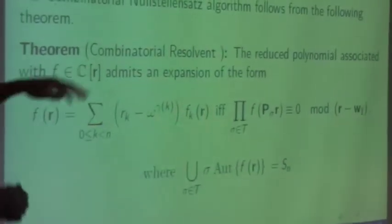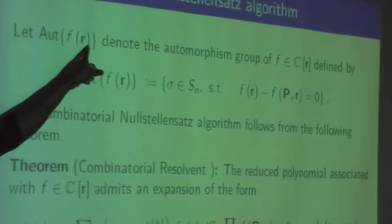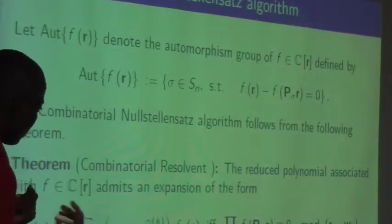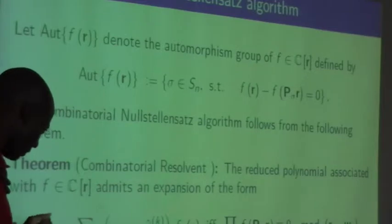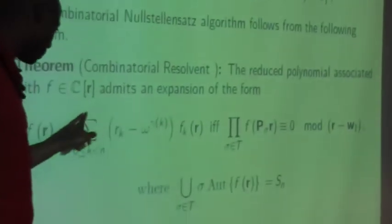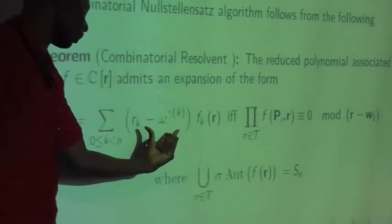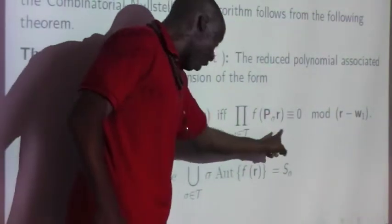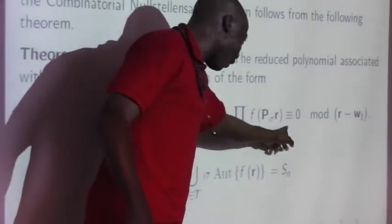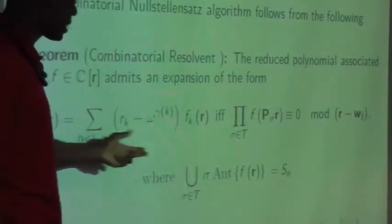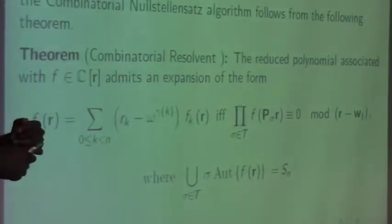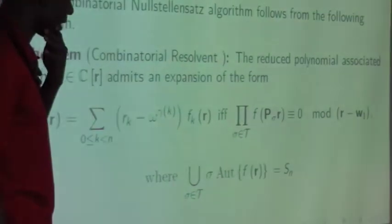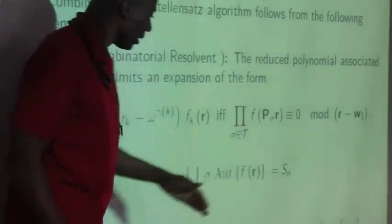The key theorem is as follows. Let Aut denote the automorphism group of our polynomial — the set of permutations which fix the polynomial, i.e., the symmetries of your graph. Our polynomial admits the desired expansion if and only if the product over all permutations — where P_sigma is the permutation matrix — is zero. If it is zero, there exists a solution; if not, there exists no solution. This is reminiscent of Galois resolvents and Lagrange resolvents.